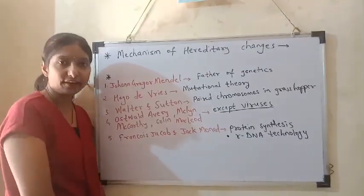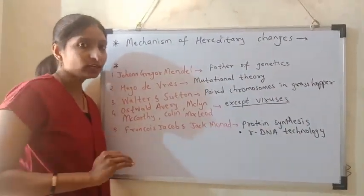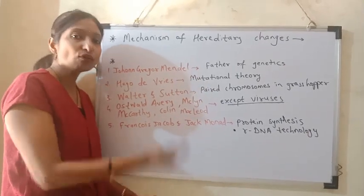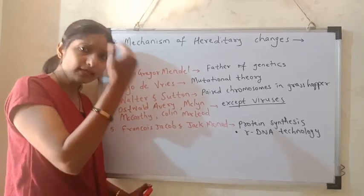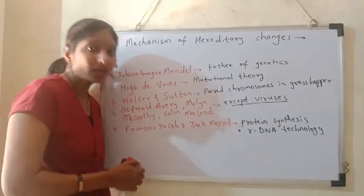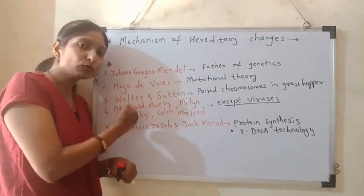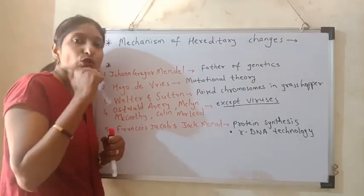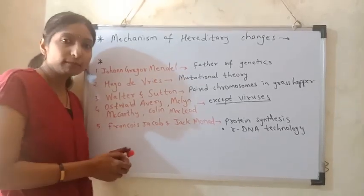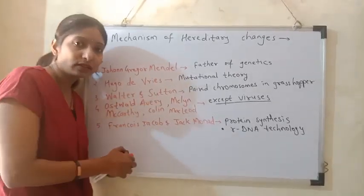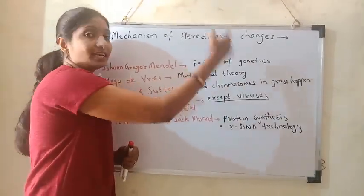We understood the definition of heredity. Now the next point: mechanism of hereditary changes. Heredity means transfer of characters from one generation to the next, or from parents to their offspring. But are we exactly identical to our parents? No. We are a combination of characters from both parents — half chromosomes from the mother's side and half from the father's side, through egg and sperm. For example, curly hair like mother, tall height like father, fair skin like mother.